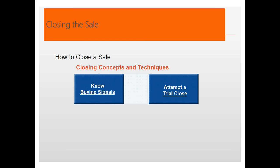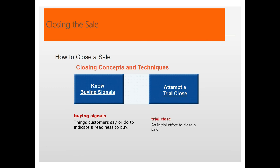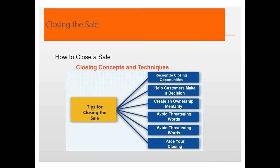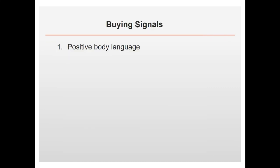To close a sale, you need to know the buying signals of your customers — the things customers say or do to indicate readiness to buy. You can also attempt a trial close — an initial effort to try to close a sale. Tips include: recognize closing opportunities, help the customer make a decision, create an ownership mentality, avoid threatening words, and pace your closing.